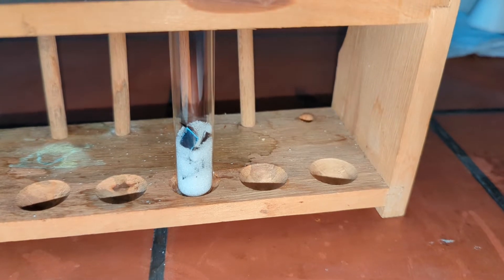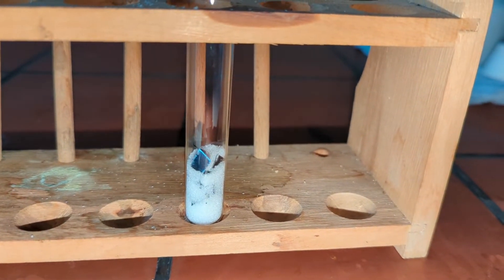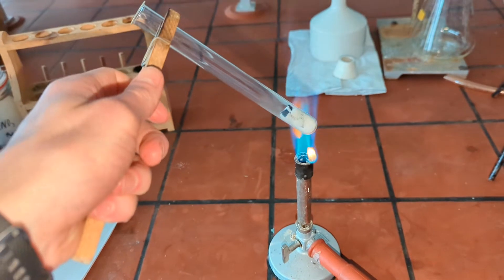We will need two substances: bismuth nitrate, which we made in a previous video, and potassium metavanadate.